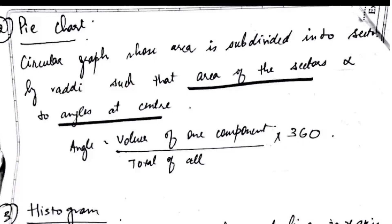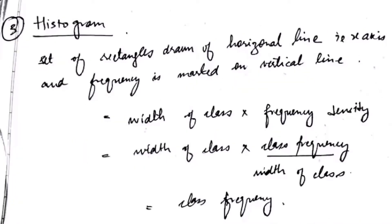Next is pie chart. This is a circular graph whose area is subdivided into sectors by radii, such that the area of the sector is directly proportional to the angle at the center.